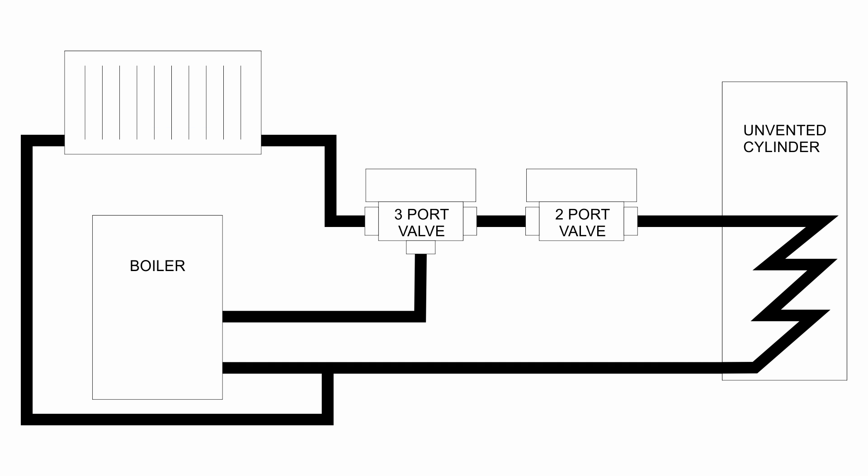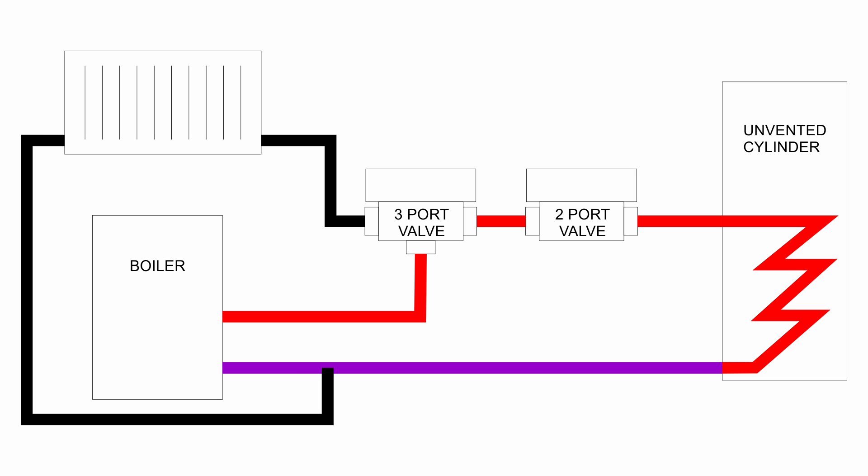And for the cylinder side it's pretty much the same deal, so again hot water comes out of the boiler there, goes across, and in this case it will go into the two port valve. Assuming that valve is open then, the hot water will flow through the coil inside the cylinder. That will of course heat up the water inside there, and then the water again returns to the boiler, and again it'll be somewhat cooler than it left the boiler, obviously that heat being put into the hot water cylinder.